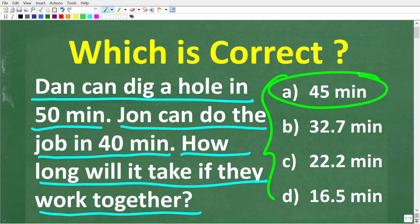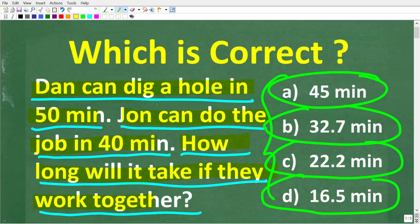Let's take a look at the answers. A is 45 minutes. B is 32.7 minutes. C is 22.2 minutes. And D is 16.5 minutes. So one more time. Dan can dig a hole in 50 minutes. John could do the same job in 40 minutes. How long will it take if they work together?